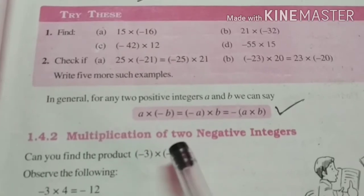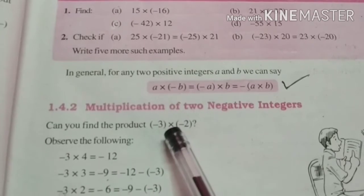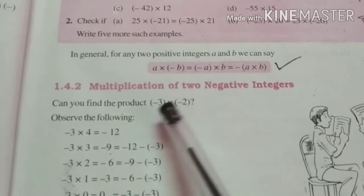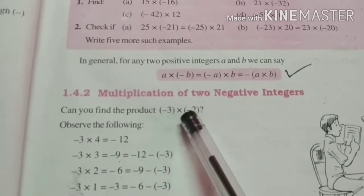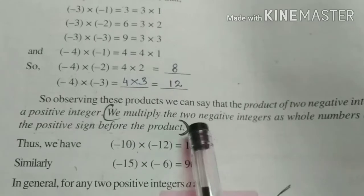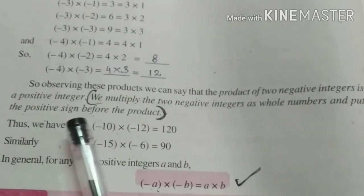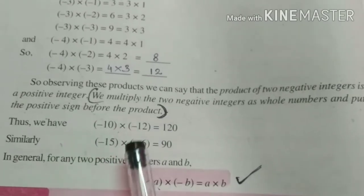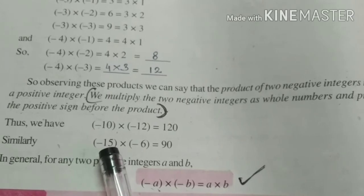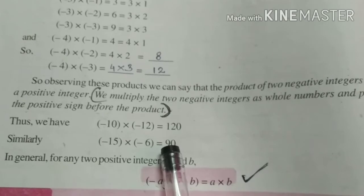Next is multiplication of two negative integers. Here you can see minus 3 into minus 2. So we know that minus minus plus 3 into 2 is 6. So we get a positive integer in the answer. We multiply the two negative integers as whole numbers and put the positive sign before the product. Here also you can see minus 15 into minus 6 that is equal to 90 positive integer.